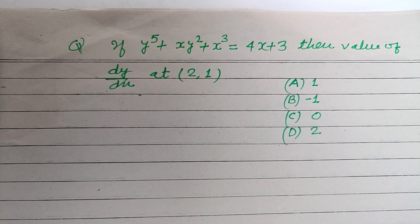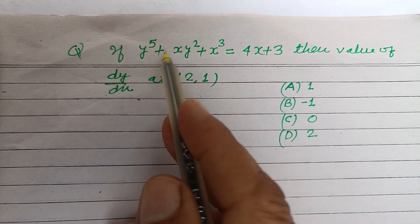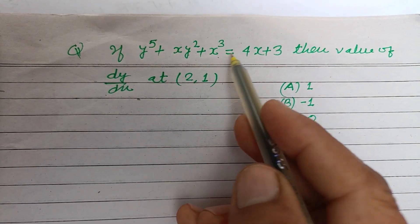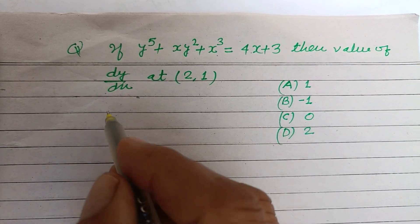Hello viewers, warm welcome to this YouTube channel. This is a question from differentiation: if y to the power 5 plus xy square plus x cubed equals 4x plus 3, then find the value of dy by dx at (2, 1).